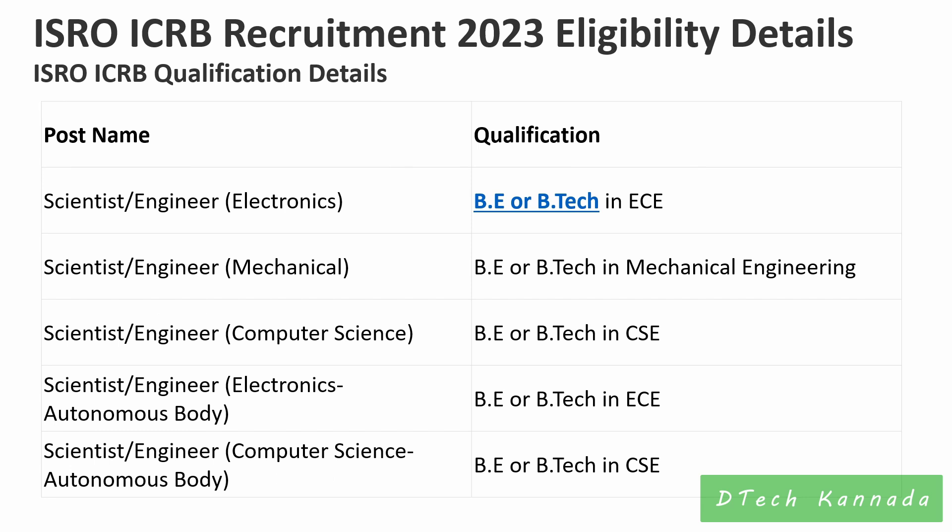I will show you the education qualification. Scientist or Engineer — Electronics: 1 vacancy, Mechanical: 1 vacancy, Mechanical Engineering: 1 vacancy, Computer Science: 1 vacancy, Electronics autonomous body: 1 vacancy, Computer Science autonomous body (CSE): 1 vacancy.